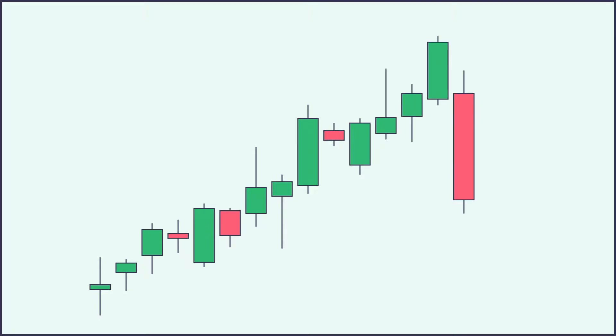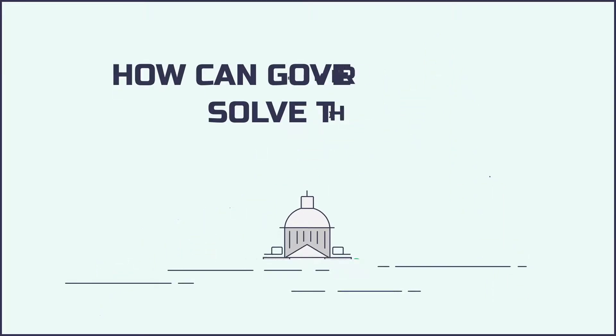Modern economists will argue that stimulus promotes spending and economic growth. Governments tell you that the printed money will go towards bettering social issues. This system should be sustainable as long as the economy keeps growing. Now ask yourself, what happens if the economy stops growing? How can governments solve this problem?